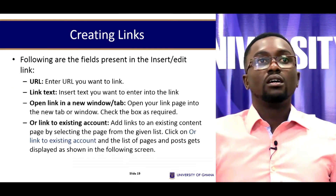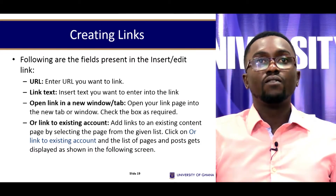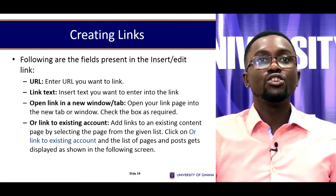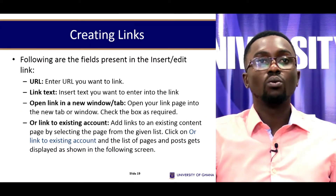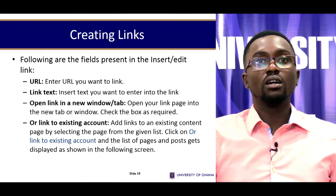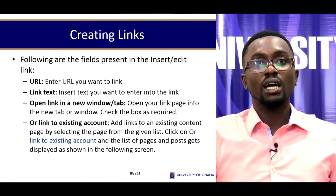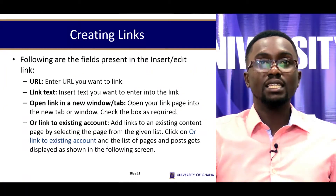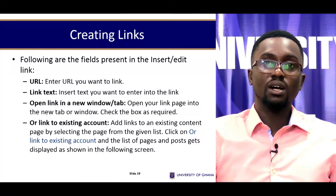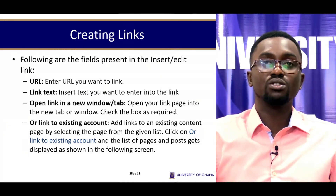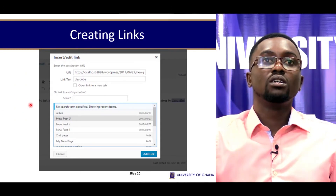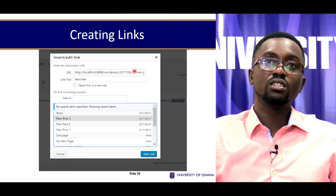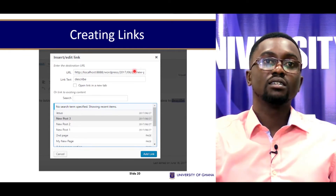The following are the fields present in Insert and Edit Link. You enter a URL that you want the link to go to when it is clicked. The link text is the text you want to display for the link. You can open the link in a new tab or window by checking the box as required. Alternatively, you can link to an existing content page by selecting the page from the given list — click on 'Link to an existing content' and the list of pages and posts gets displayed. The link text is 'describe,' and the URL is where the navigation will go. After you've entered the URL, you click Add Link.